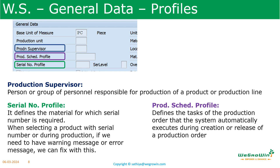Then there is the production scheduling profile. The production scheduling profile defines tasks of the production order — how the system will execute some activities automatically or not. For example, the system can automatically release the production order as soon as it is created, or the system can automatically send shop floor papers for printing when you release the order. This will save a lot of time performing individual functions. Also, we can combine many activities using this production scheduling profile.